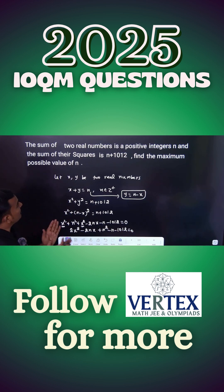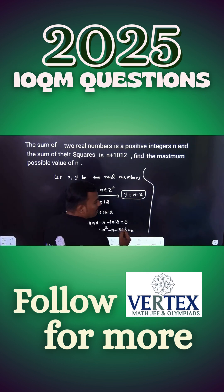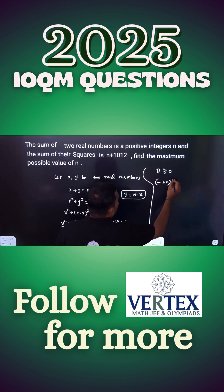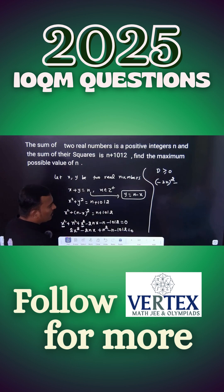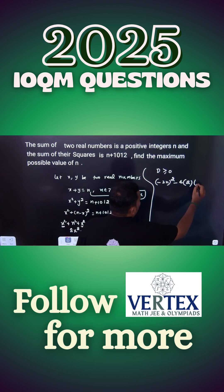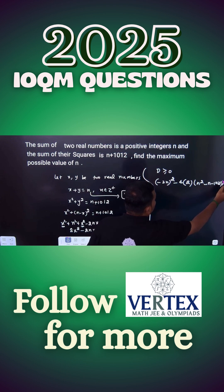We need complete real solution. That means the discriminant should be greater than or equal to 0. x and y are real numbers, right? So the discriminant should be greater than 0. What is b here? Minus 2n, minus 2n whole square b square minus 4ac, 4 into 2 into c is what? n square minus n minus 1012 is greater than or equal to 0.